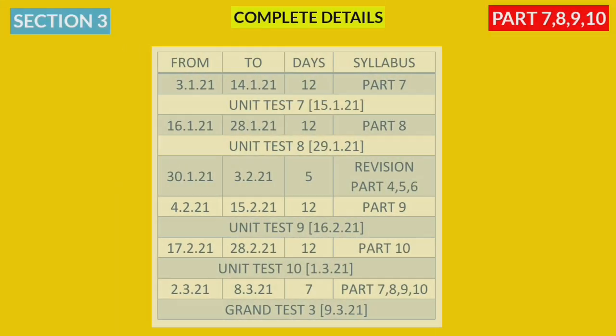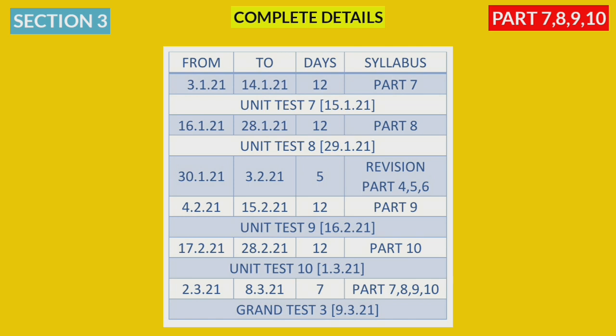Next, Section 3. In this section, there are 4 parts. The first two parts are Part 7 and Part 8 — we complete a unit test. The next two parts are Part 9 and Part 10. There are 5 days in between, so in those 5 days, revise the Section 2 syllabus once again. Then complete Part 9 and Part 10 syllabus and take a unit test. Finally, for all 4 parts of Section 3 syllabus, we complete a grand test. In Section 3, we complete the full syllabus.